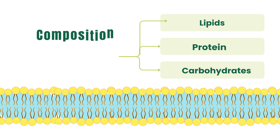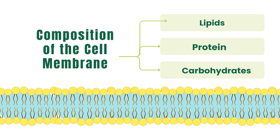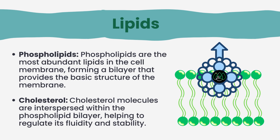The cell membrane is primarily composed of lipids, proteins, and carbohydrates. The relative proportions of these components can vary slightly depending on the type of cell and its specific functions. In the cell membrane, lipids — primarily phospholipids and cholesterol — are crucial components. Phospholipids, the most abundant lipids, form a bilayer, providing the membrane's basic structure. Cholesterol molecules are scattered within this bilayer, regulating its fluidity and stability.